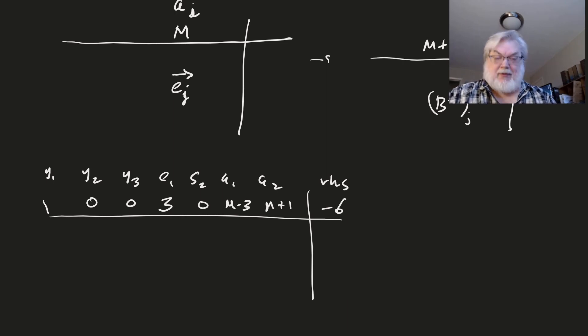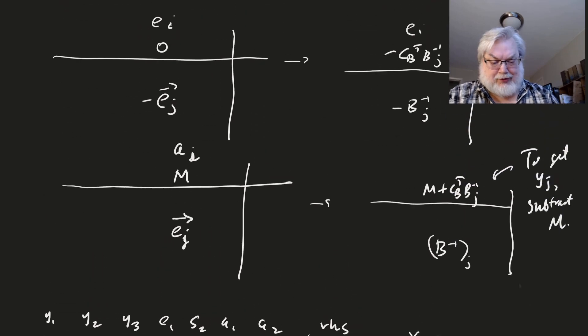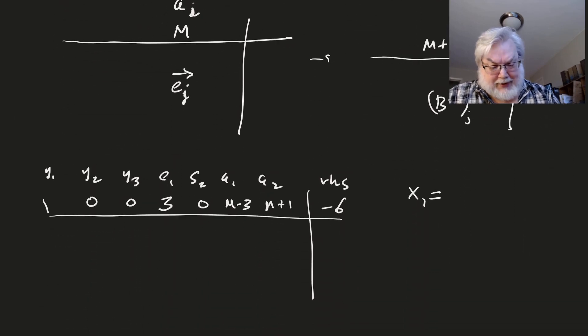And so now if I want to find out what the solution to the dual is, I would say just from this table and using our previous shortcuts, that X1, the solution to the dual, which is the primal, would come from negating the coefficient here, which would be minus three. And then X2 would come from S2, which is zero. And then X3 comes from A2. That's the third column of the identity. And in this case, then we would have a one, if we just subtract M. Okay.